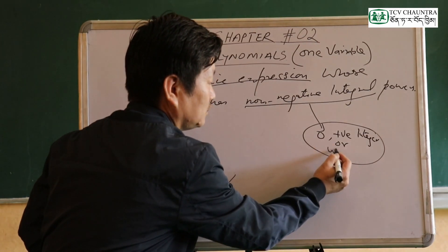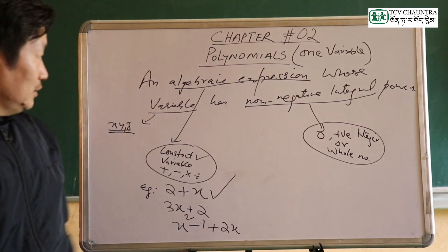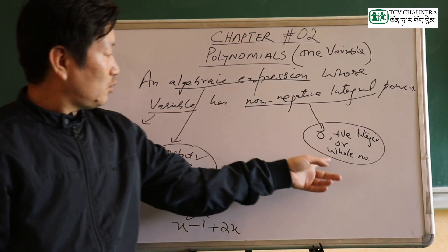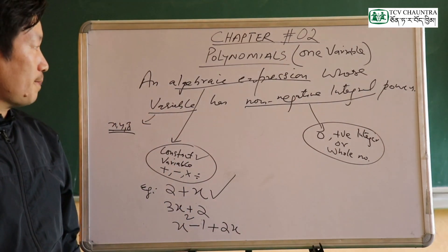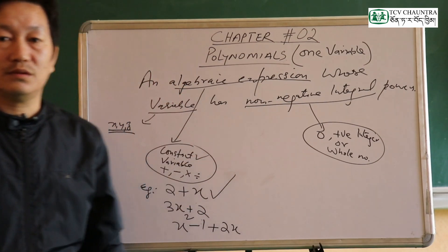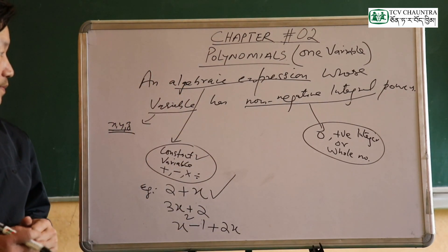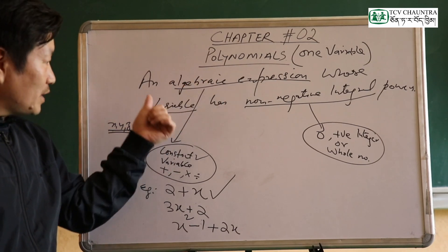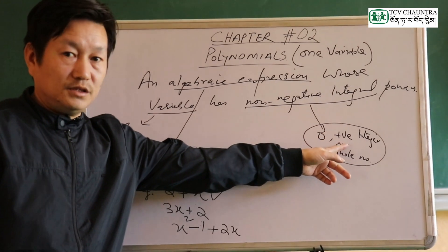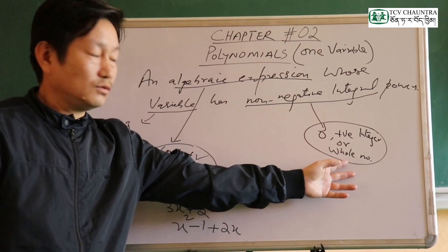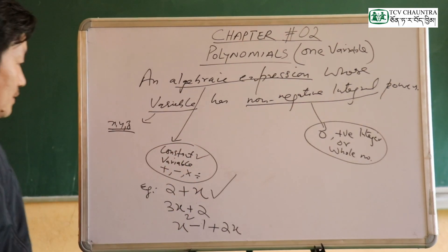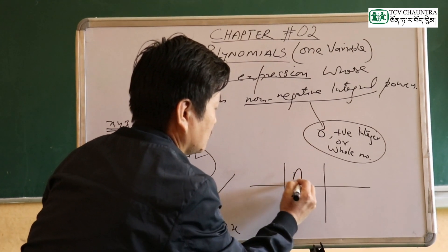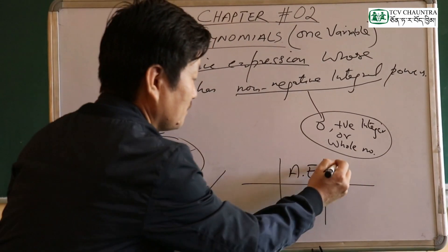In other words, we use whole numbers as the power in the algebraic expression. So the definition of a polynomial is: an algebraic expression whose variable has whole numbers as its power. Variables raised to power zero are also possible, and the expression is still a polynomial.